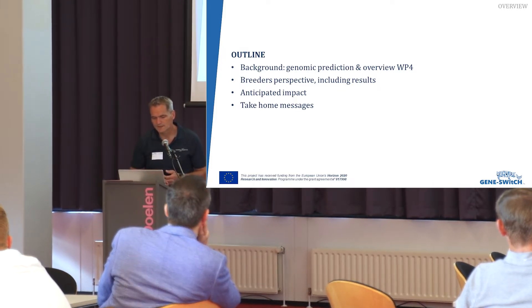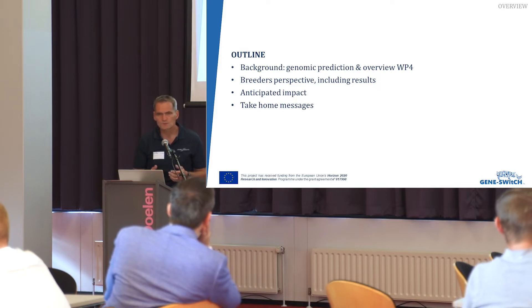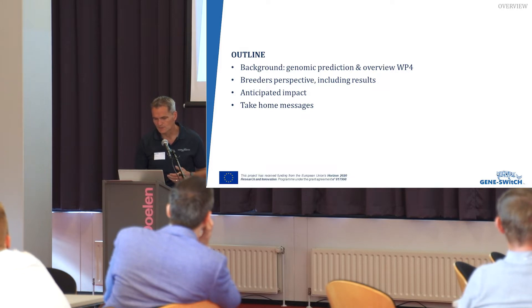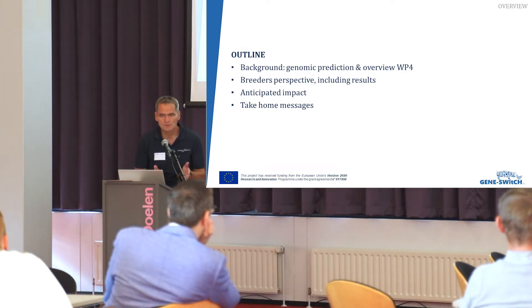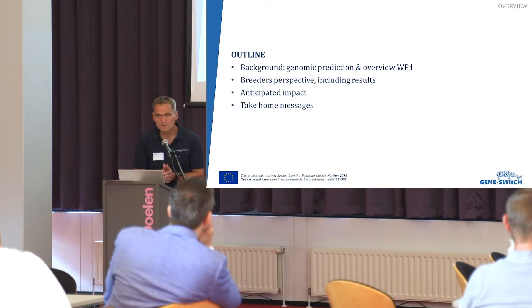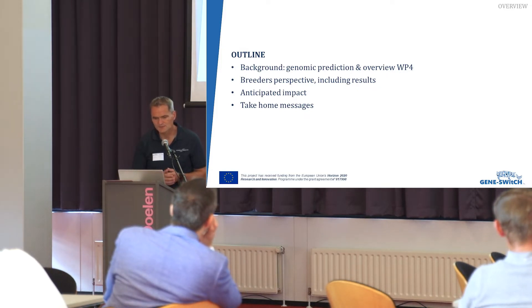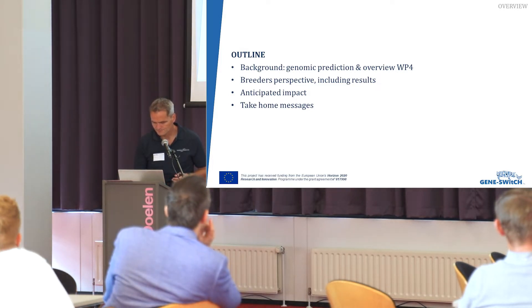The easiest way to explain the value of genomic prediction is with a litter of four piglets. At birth we cannot really distinguish between the four which one has the best breeding value to produce piglets herself. So we take a blood sample or tissue sample, extract DNA, do a DNA profile by SNP arrays, and put that into a prediction model. We get genomic breeding values — for example for the trait 'number of piglets' — and we can see that animals two and four have a positive breeding value while one and three have a negative one.